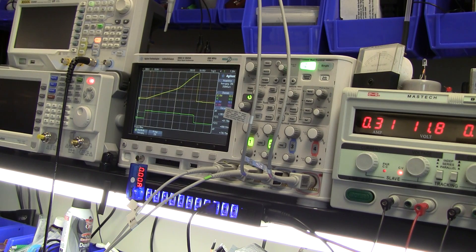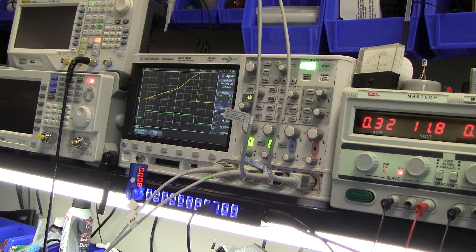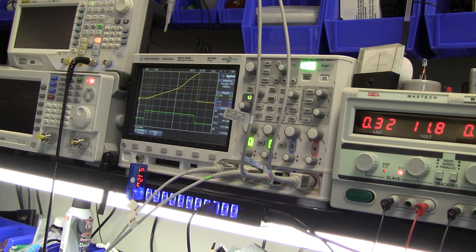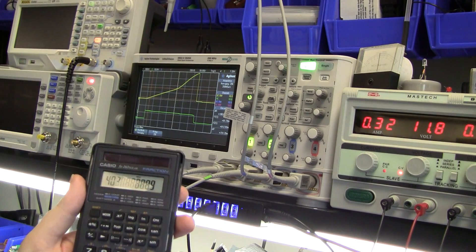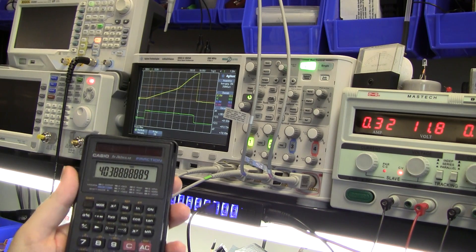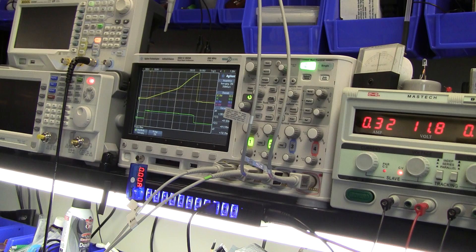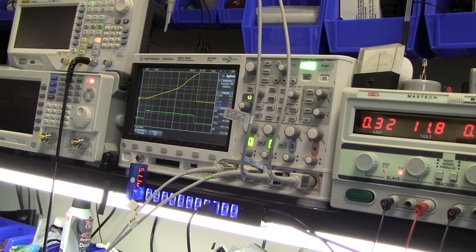So 7.23 amps in 180 microseconds. 7.27 it says now after it's averaged for a little bit longer. Here divided by 180 microamperes equals 40,389 amperes per second which makes sense.